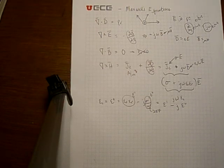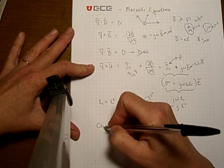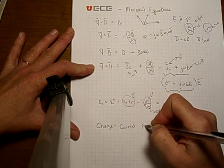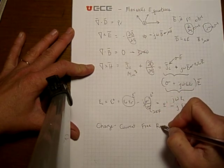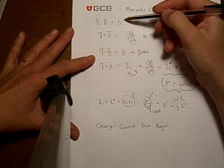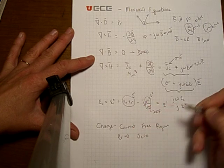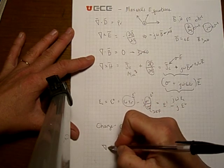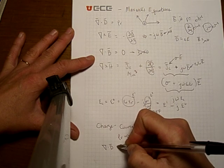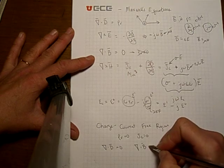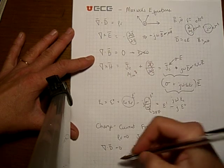If we had a charge free region, that's also a very important approximation. So if we have a charge and current free region, that means there's no charge and there's no current in this region, then rho V goes to zero and the conduction current goes to zero. So in that case, we have that the divergence of the electric flux density is equal to zero. Of course, the divergence of the magnetic flux density is equal to zero.